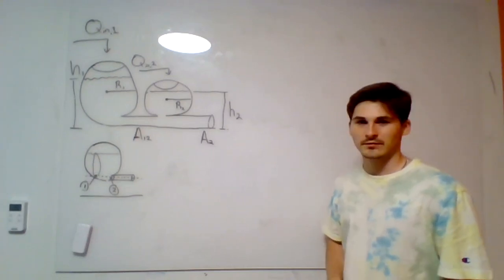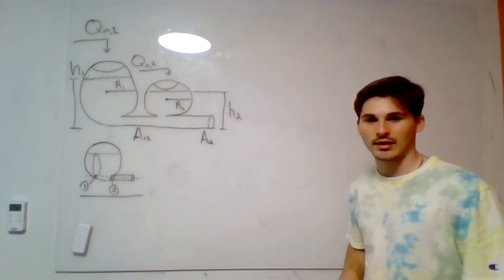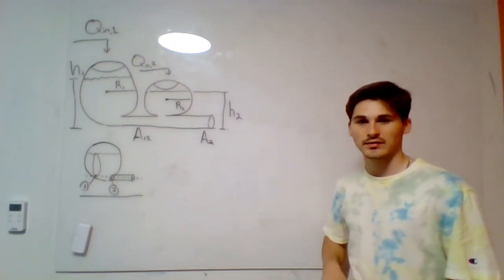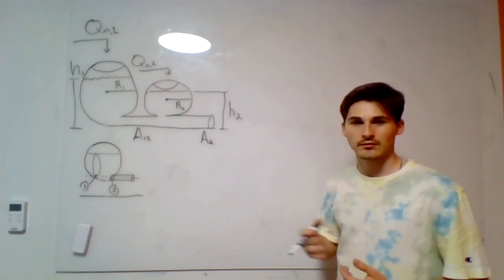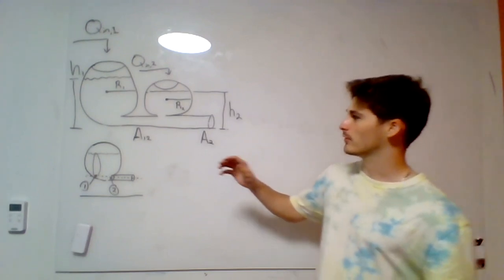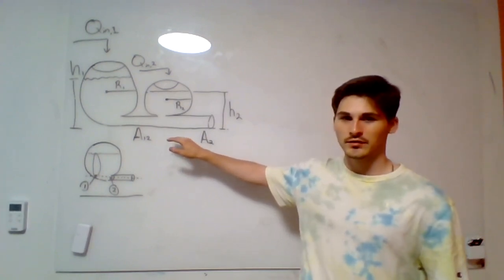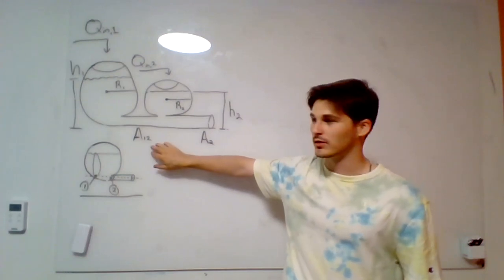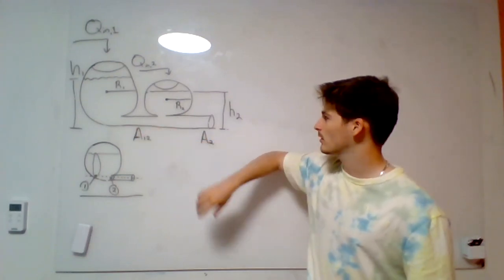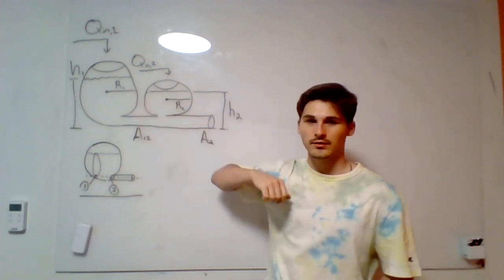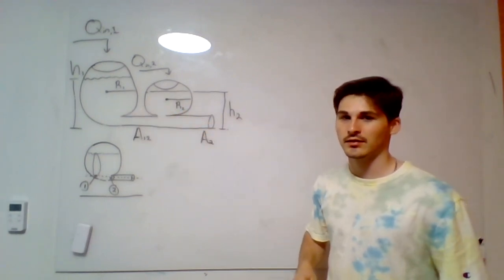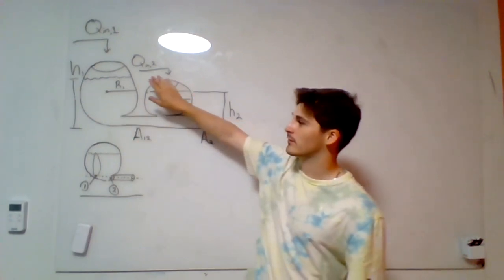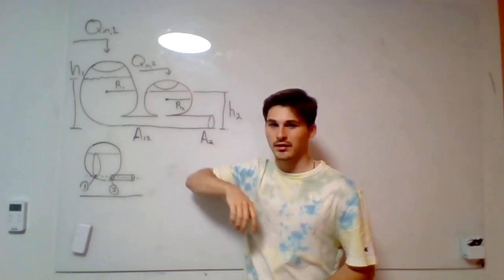Hello, my name is Matthew and in this video I'm going to model this system that we have to my right. We'll find how the volume of the liquids in each tank change with time and how the heights of the liquids in each tank change with time. We have the cross-sectional area of the pipe leaving our system, the cross-sectional areas of the pipes between tank 1 and 2, the initial heights of the liquids, the radii of each tank, and an inlet flow entering each tank whose value is unknown.